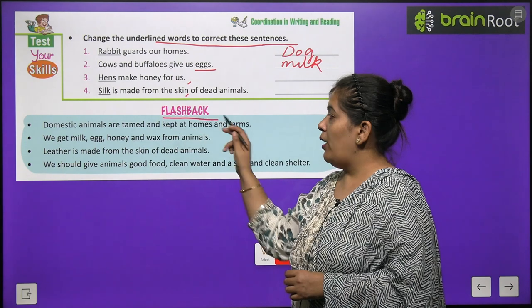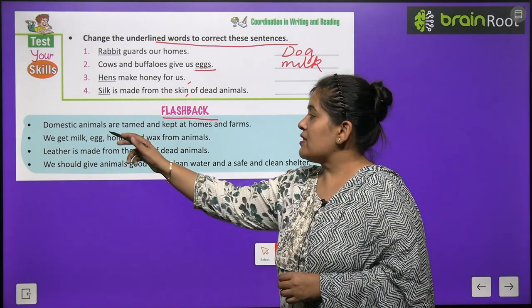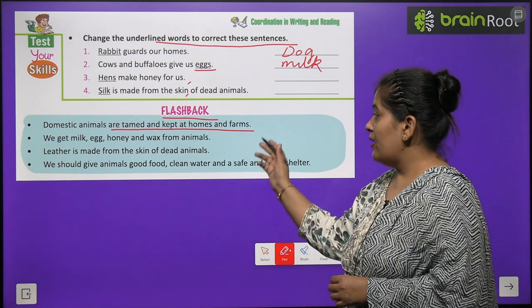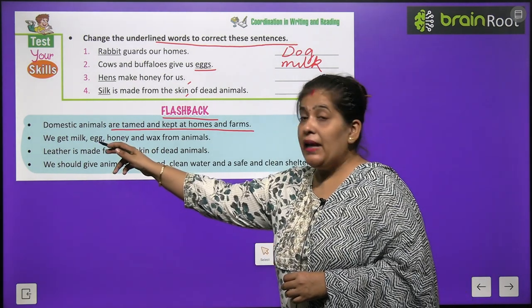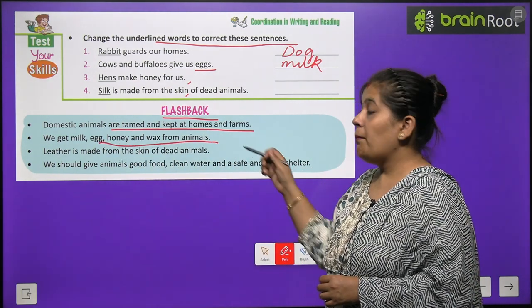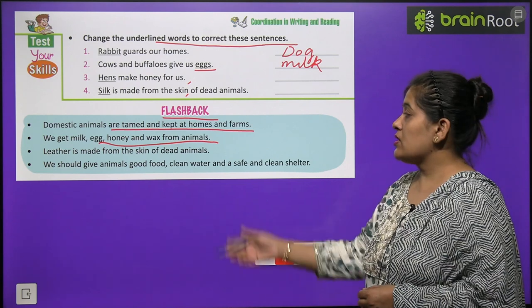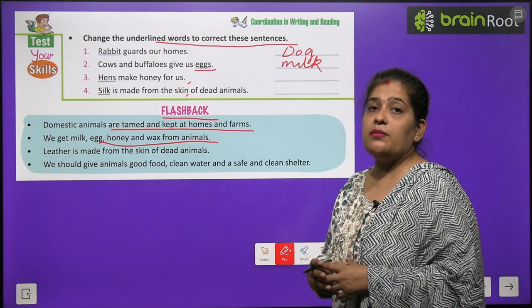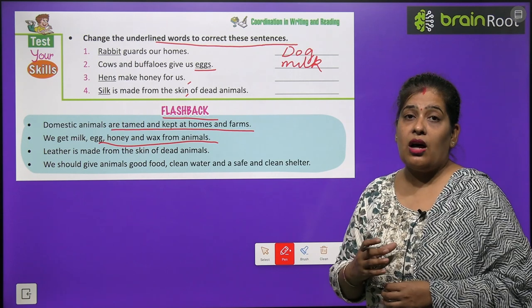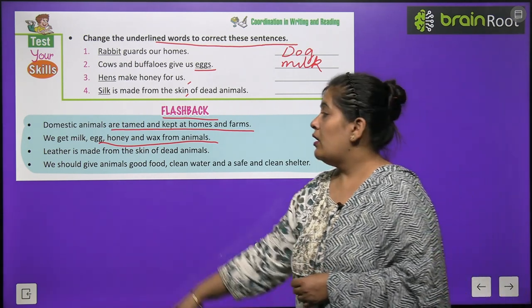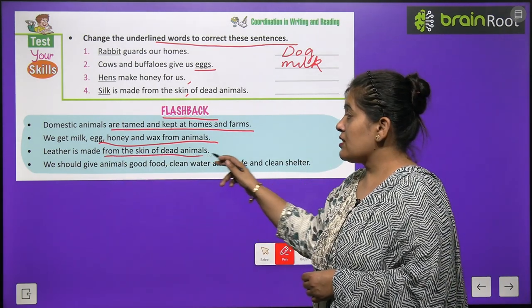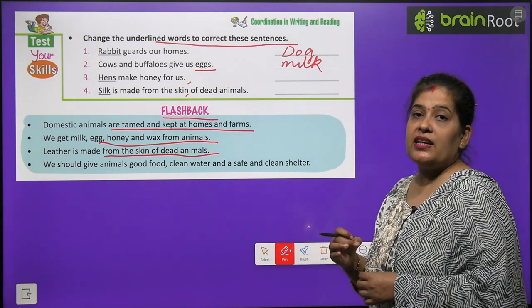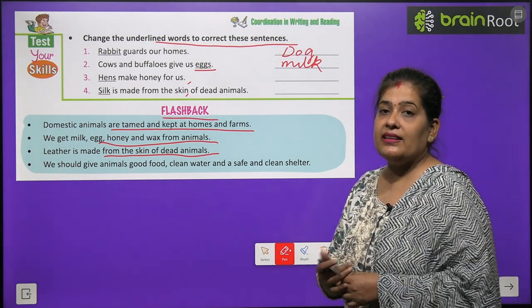Now time to go in flashback. Domestic animals are tamed and kept at home and farms. We get milk, honey and wax from animals. Hume janvaro se wax milta hai, honey milta hai aur egg. Wax kis se milta hai? Madhumakhi ka jo chhatta hota hai, usse hume wax milta hai. Leather is made from the skin of dead animals. Kuch mare hue janvaro ki skin, twacha se kya banta hai? Leather.